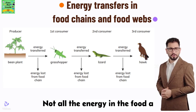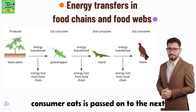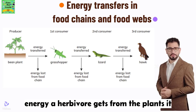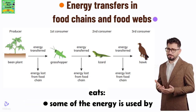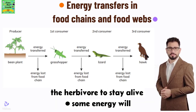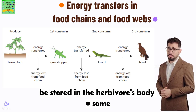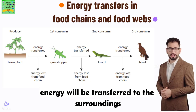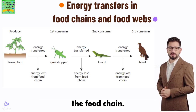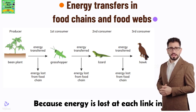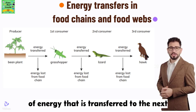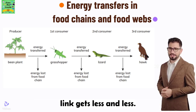Not all the energy in the food a consumer eats is passed on to the next link in the food chain. For example, this is what happens to the energy a herbivore gets from the plants it eats: some of the energy is used by the herbivore to stay alive, some energy will be stored in the herbivore's body, some energy will be transferred to the surroundings as heat, and the rest of the energy is lost from the food chain. Because energy is lost at each link in a food chain or food web, the amount of energy that is transferred to the next link gets less and less.